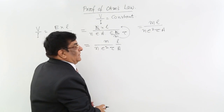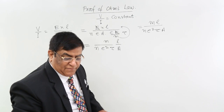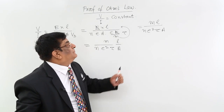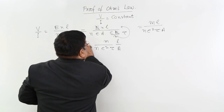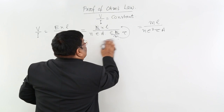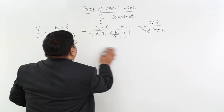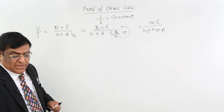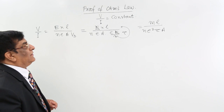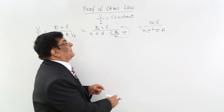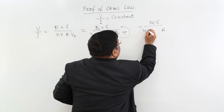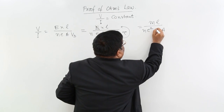Now we will study this particular expression which we have received. This expression represents V upon I. If this is V upon I and if it is a constant, then we will say that V upon I is a constant.